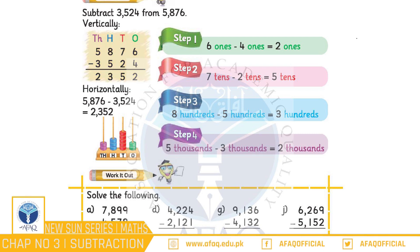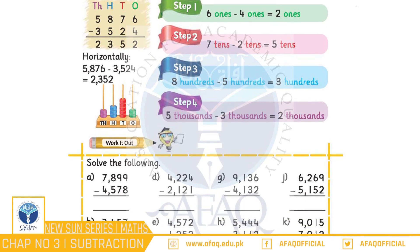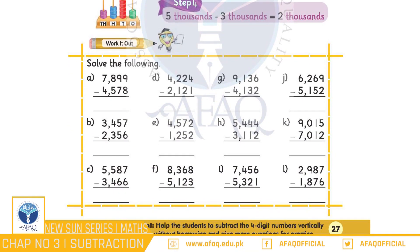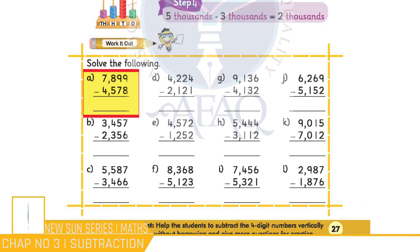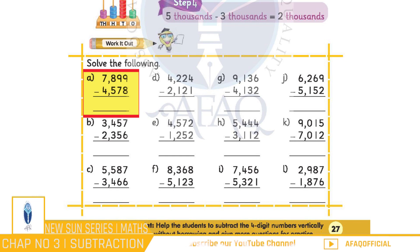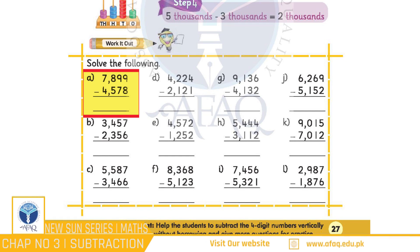Bacchiyon, is baat ko mazeed samajhne ke liye hum yahan diya gaya pehla question milkar solve karenge jismein aap dekh sakte hain ki 7,899 mein se 4,578 ko subtract kiya jaana hai.